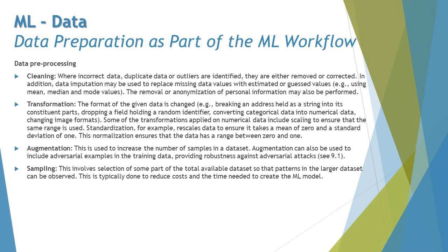Moving to data pre-processing: do not expect your data to be ready as-is to feed directly into the ML model. Sometimes you use production data that needs to be cleaned and scrubbed, because there may be unwanted information that could mislead your ML model. Pre-processing contains the activities needed to prepare data in the right form. The first activity is cleaning, where incorrect data, duplicate data, or outliers are identified and either removed or corrected.